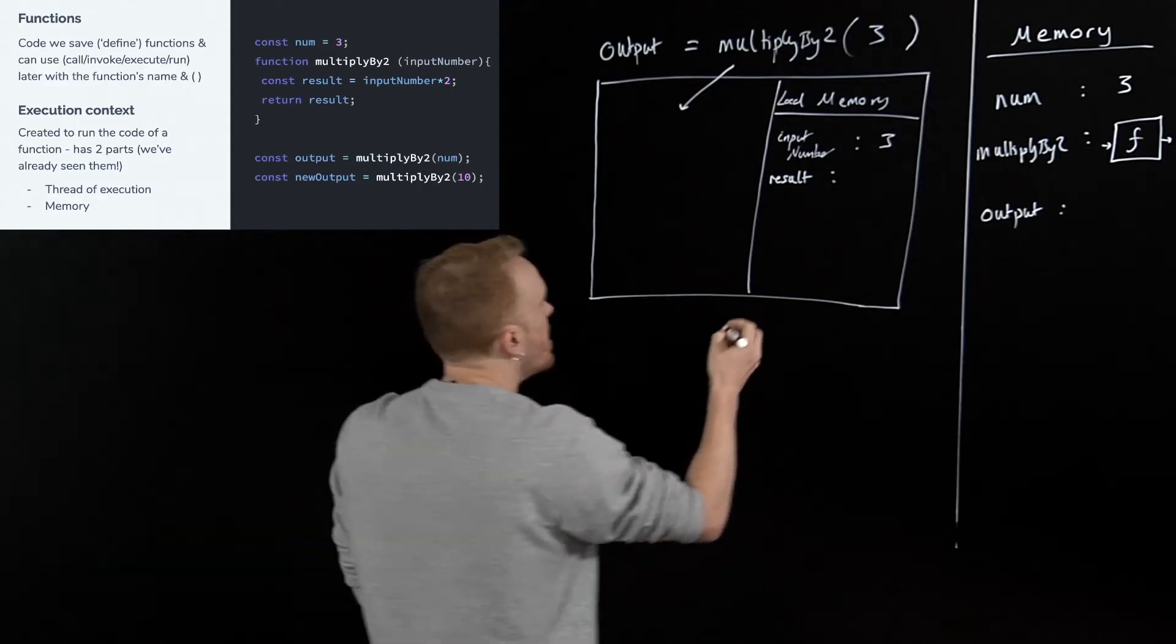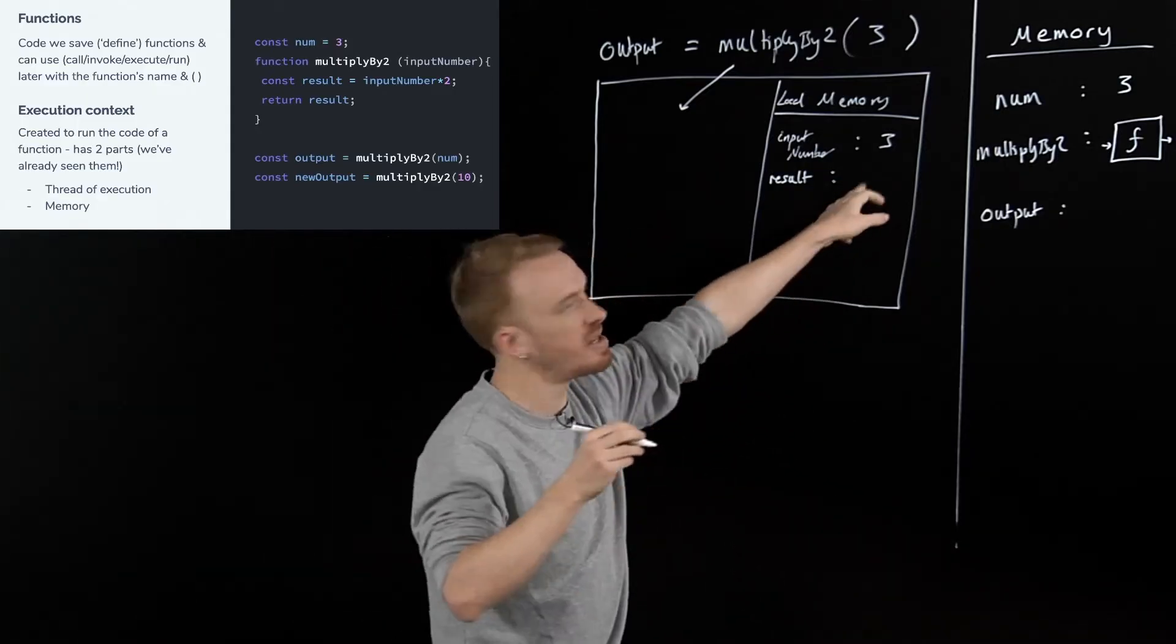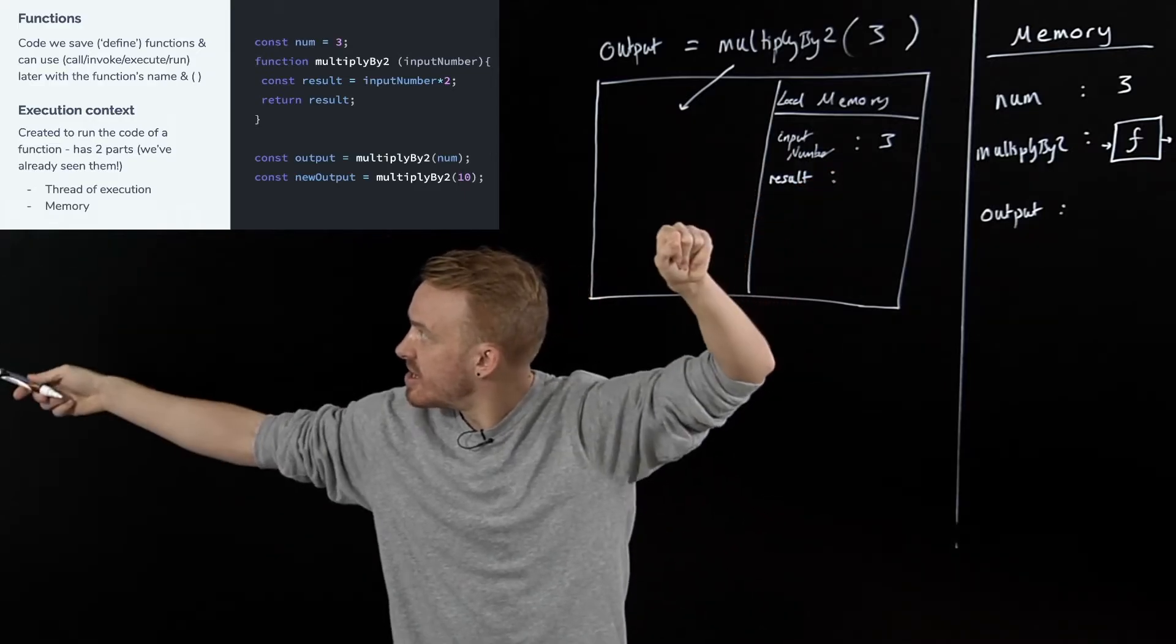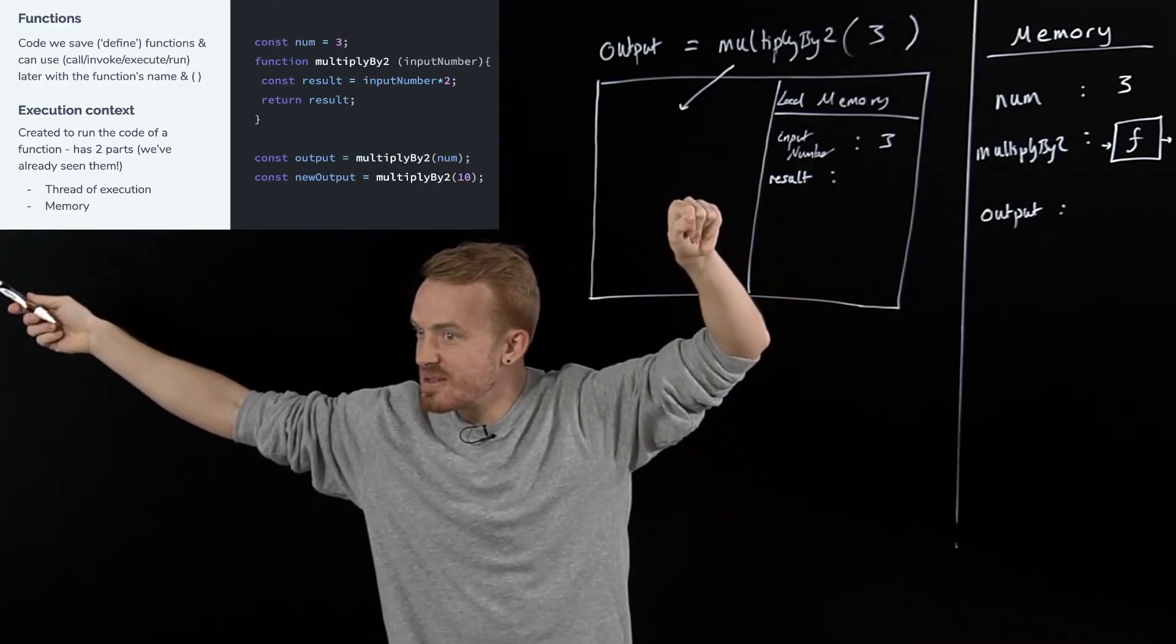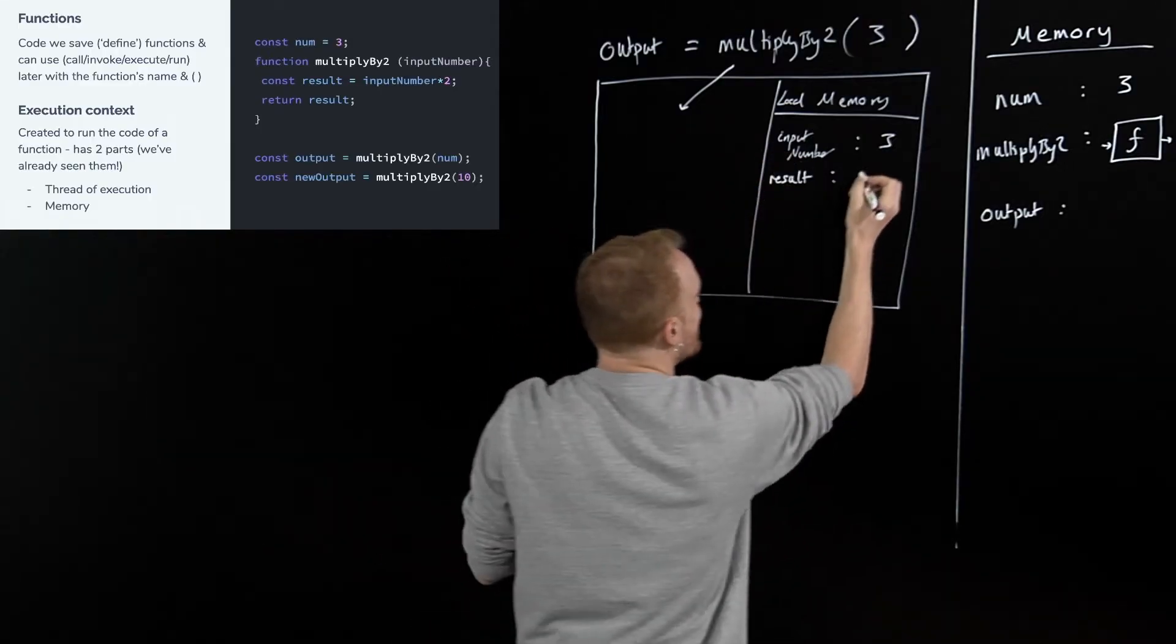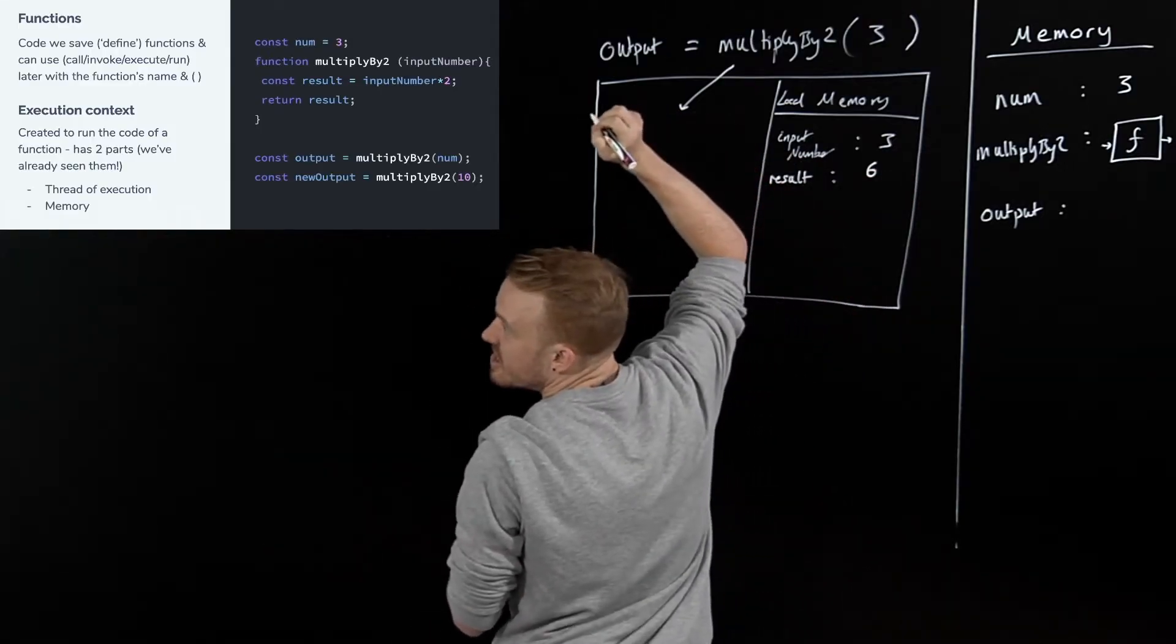Then we hit result and assign it. Ethan, what is result going to be stored? What's going to have it stored in it? Input number times two. Which is going to be? Six. Three by two is going to be six. Excellent. Thank you to Ethan.